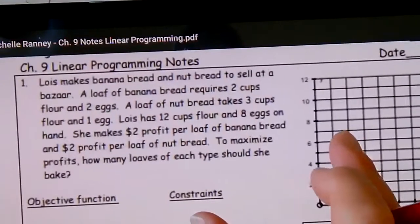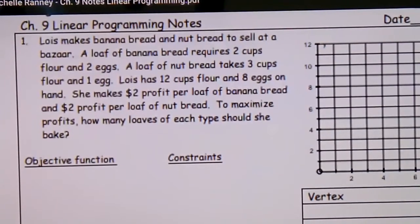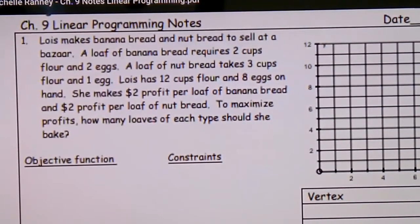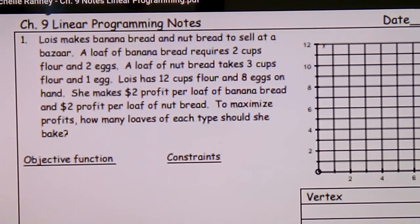Let me read through problem one. Lois makes banana bread and nut bread to sell at a bazaar. A loaf of banana bread requires two cups flour and two eggs. A loaf of nut bread takes three cups flour and one egg. Lois has 12 cups of flour and eight eggs on hand. She makes $2 profit per loaf of banana bread and $2 profit per loaf of nut bread. To maximize profits, how many loaves of each type should she bake?